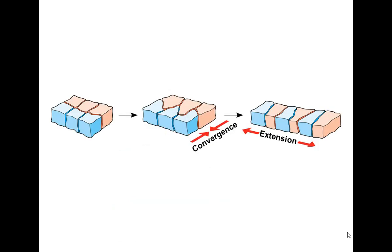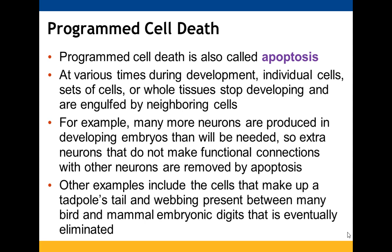Programmed cell death — apoptosis — means some cells do not survive development. Depending on where you are in development, individual cells, tissues, or sets of cells stop developing and are engulfed by neighboring cells. Neurons are one example: lots are made but not all are needed, so those that don't make functional connections are removed. Other examples are the cells making up a tadpole's tail and the webbing initially present between bird and mammal embryonic digits, which is eventually eliminated.